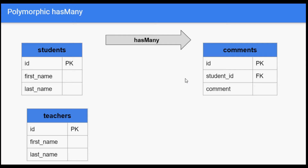In this video we will cover the polymorphic has-many relationship. When we discussed has-many relationship, we had a student and a student has many comments. Now let us assume we also need to have comments for teachers. Either we need to create a separate table, or we can change our current comments table to have a polymorphic relation.